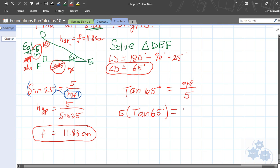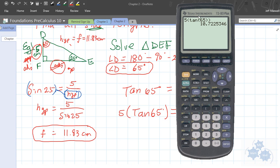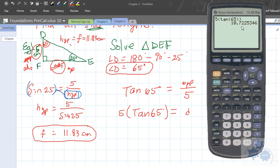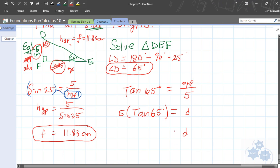So, on your calculator, if you do that calculation, you should get 10.72. d equals 10.72. And, that's going to be in centimeters. All right? So, how are we doing there? Did we get everything?